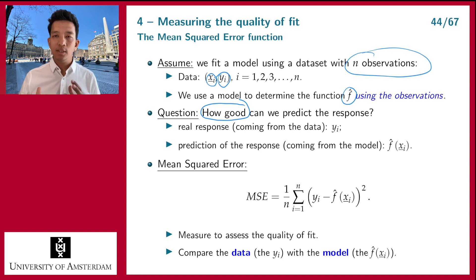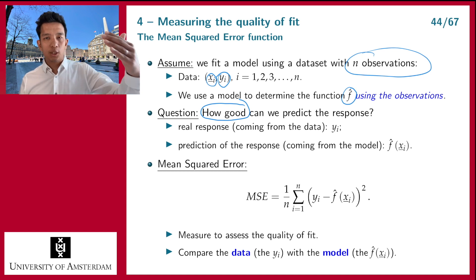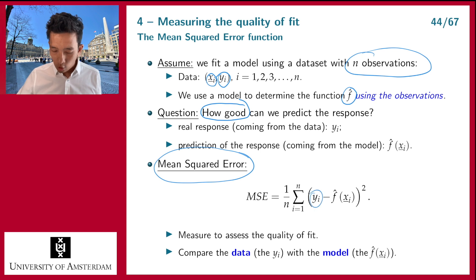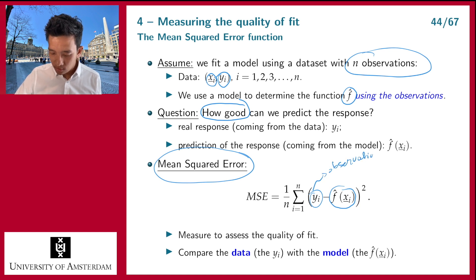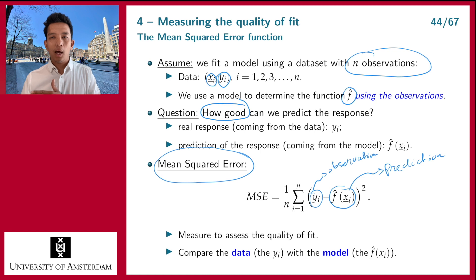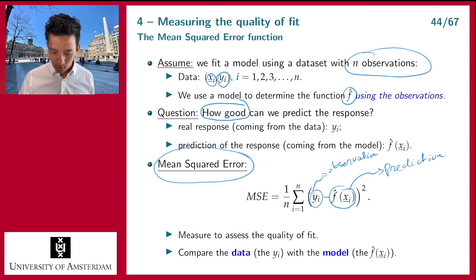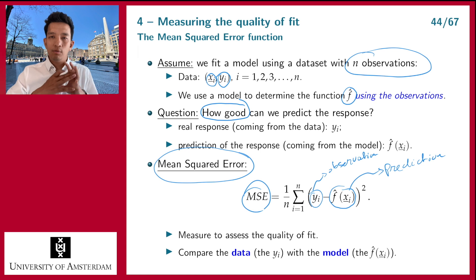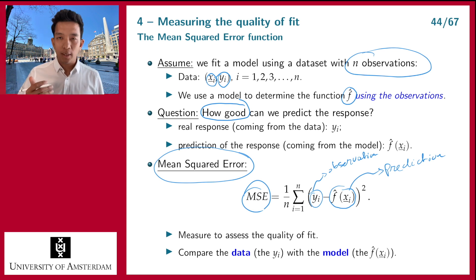How do you measure the distance between your prediction and the data? A very common approach is to use the mean squared error. You look at your observation Y_i and your prediction f-hat. The mean squared error looks at each observation i: what is the observation, what is the prediction, you take the squared difference — that is the measure for closeness. If the MSE is small, all your predictions f-hat are close to your observations Y_i. If the MSE becomes larger, there are more observations that are not well predicted by our model. So the MSE is what we call a measure for the quality of the fit.